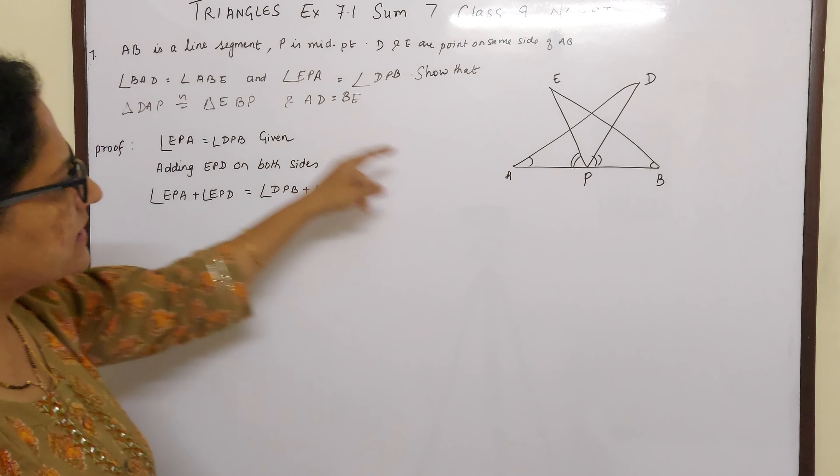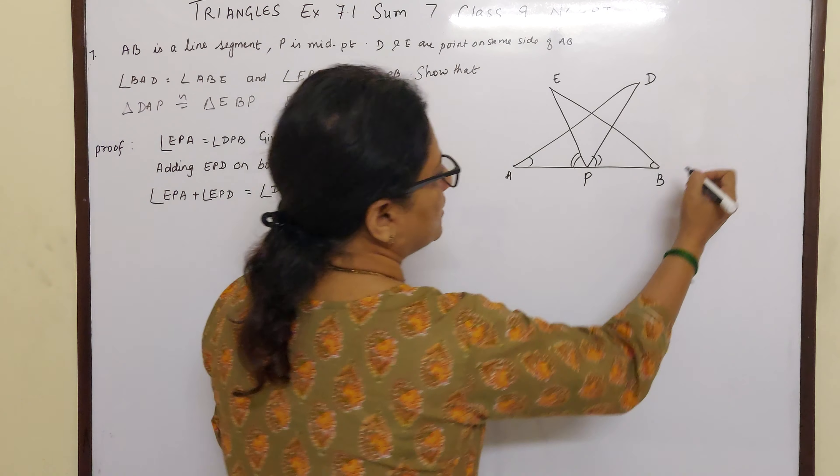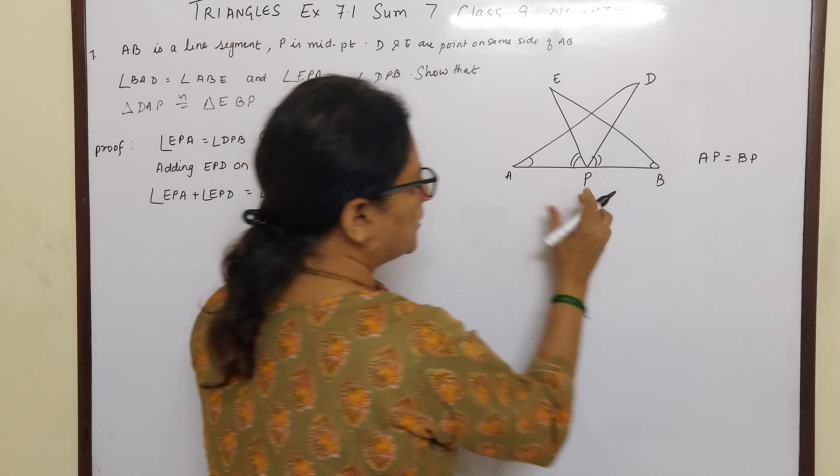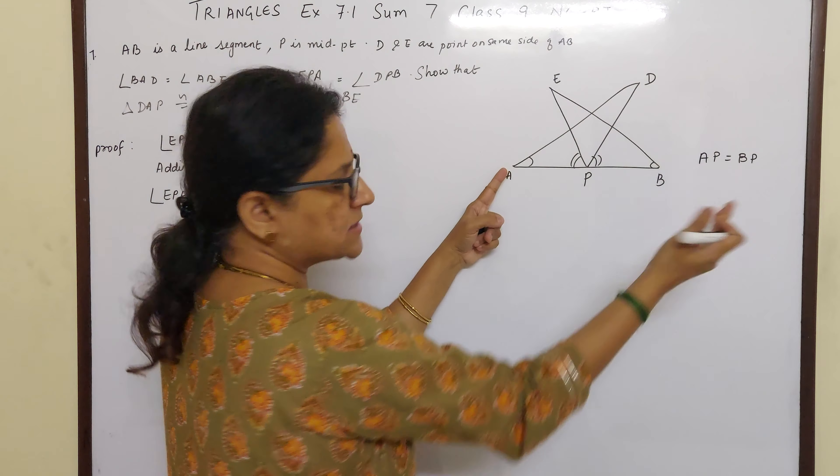We are saying AB is a line segment and P is the midpoint. So if P is the midpoint, I can say AP is equal to BP. Because AB is 10 cm and P is the midpoint, that means this is 5 and this is 5. So we can say AP is equal to BP.